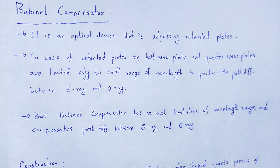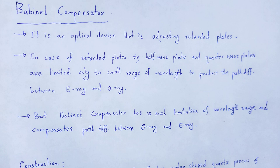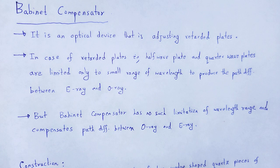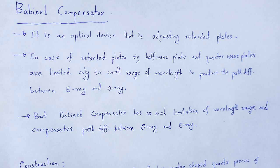Retarder plates are basically used to showcase the path difference between the E ray and O ray. They are categorized as half wave plates and quarter wave plates. In case of half wave plates, the path difference between E ray and O ray is λ/2, that is half of the incident wavelength. In case of quarter wave plates, the required path difference between E ray and O ray is equal to λ/4, that is one-fourth of the incident wavelength. By using these retarder plates we can easily obtain our required path difference between E ray and O ray. But there is a drawback.